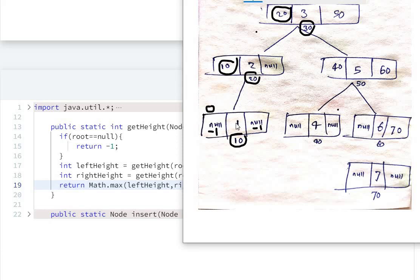So its height is zero because it will take the maximum of the two and add one, so it will be zero. Now we'll come here - left is done, now it will check right.